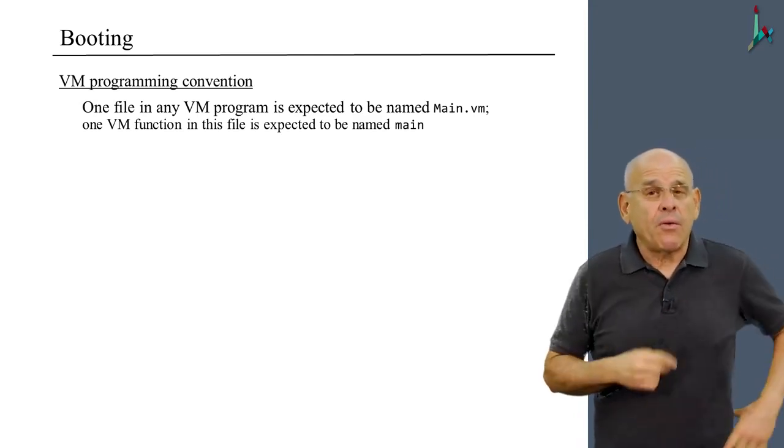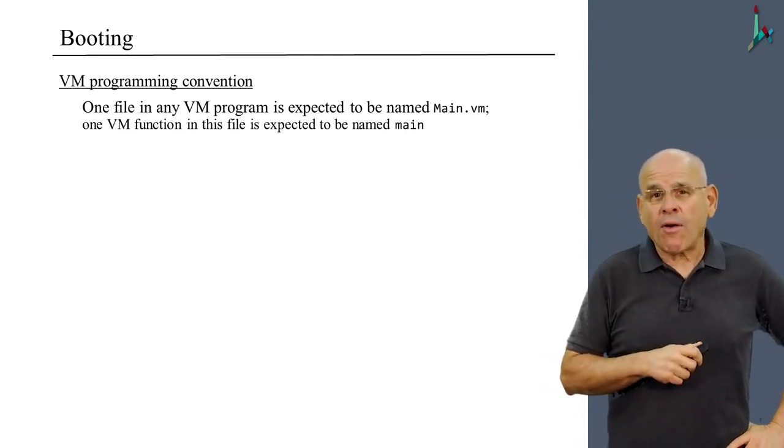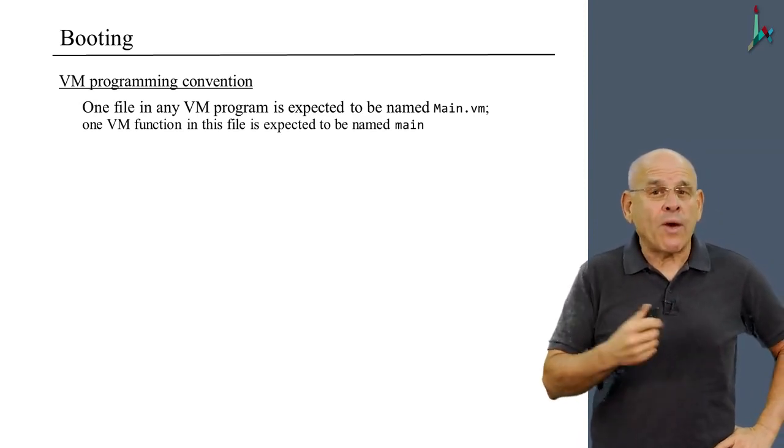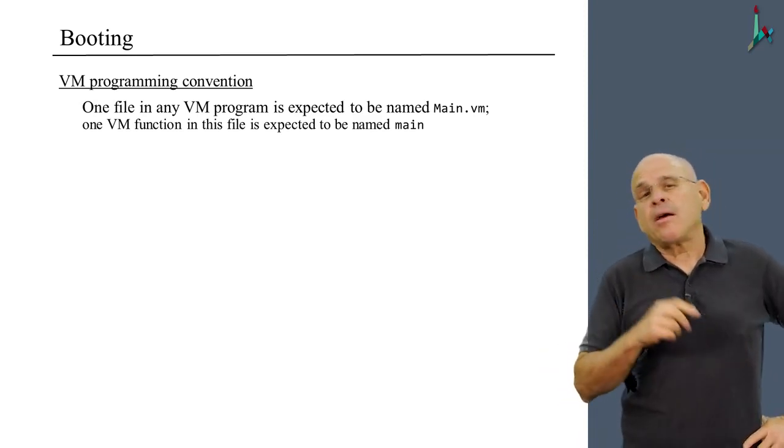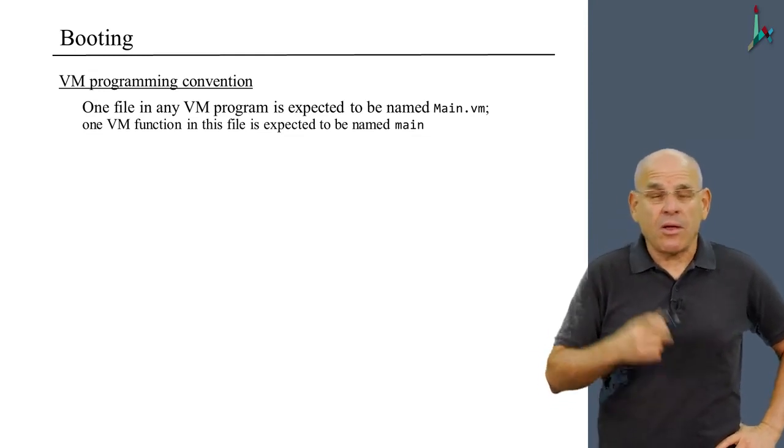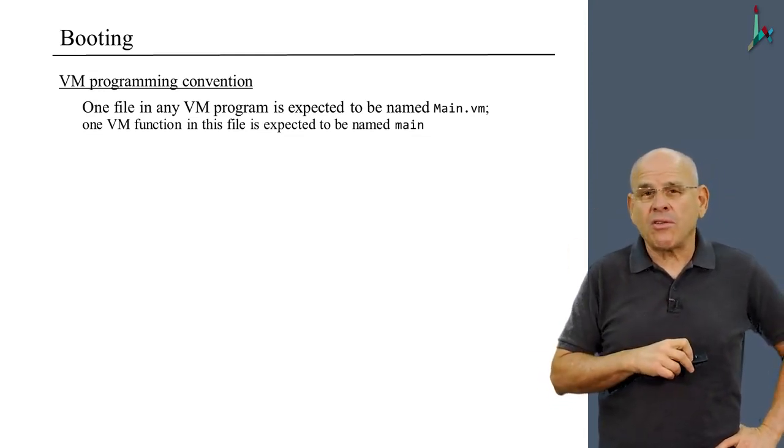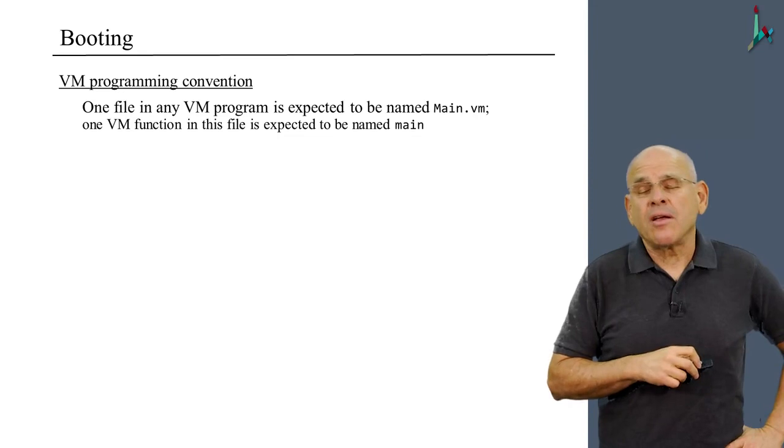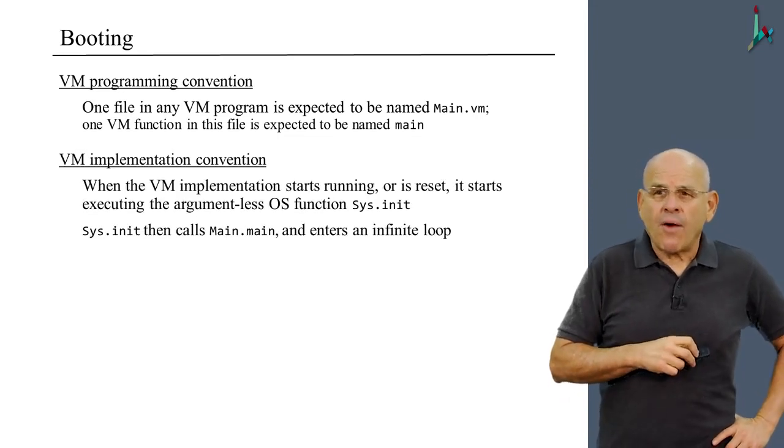When we write Jack programs, we also require that at least one class will be named main. And one function in this class should be named main also. So this convention we're going to get it for free.